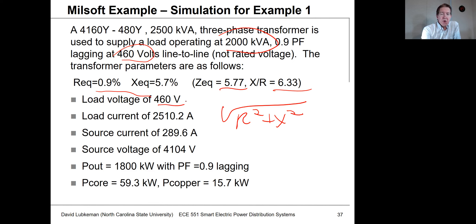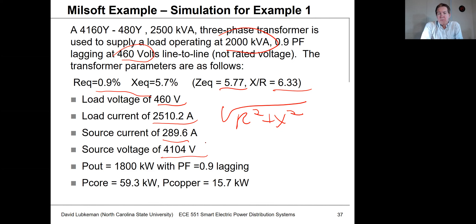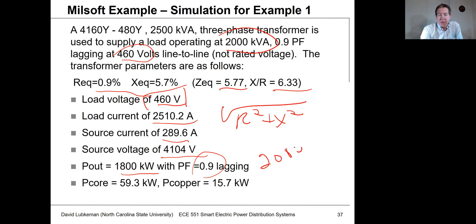The load voltage was 460 volts, and the load current was 2,510 amps. On the source side, it was 289.6 amperes, and the source voltage turned out to be 4,104 volts line-to-line. The real power output was 1,800 kilowatts at a power factor of 0.9. If we take the 2,000 kVA times the power factor, that's where we get the 1,800 from.